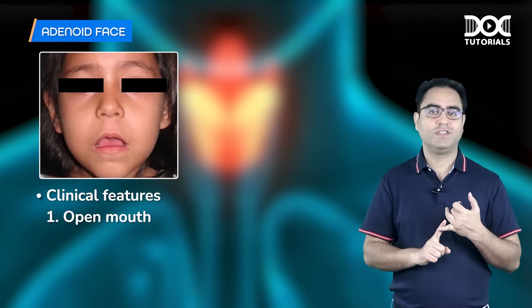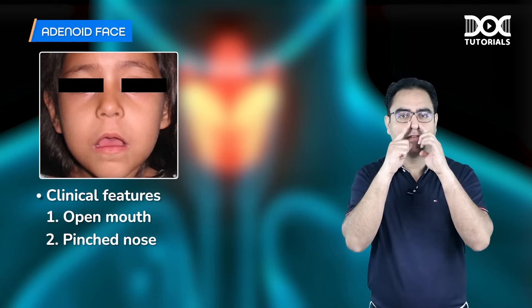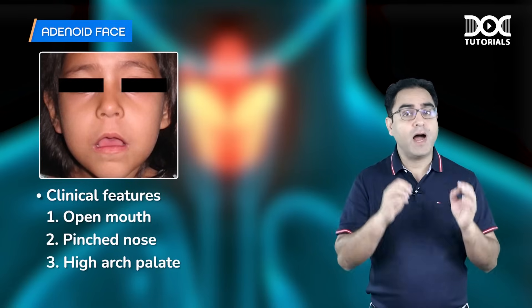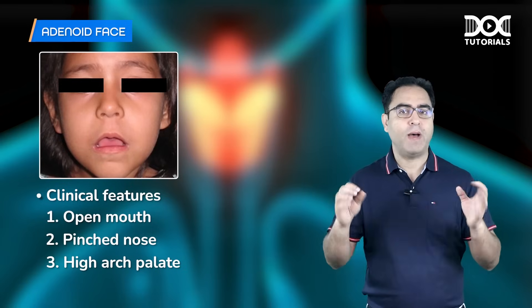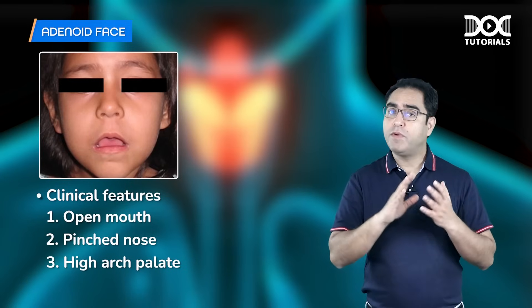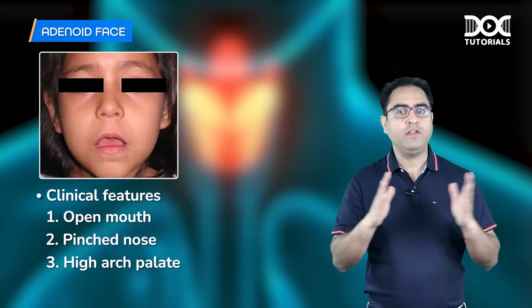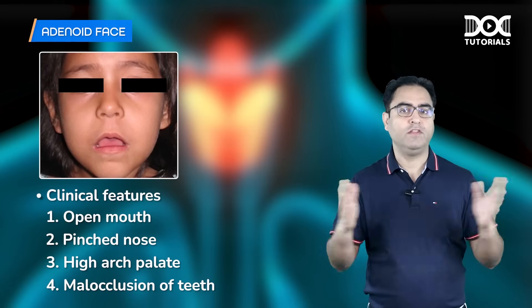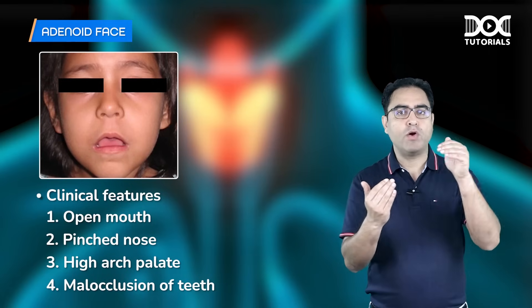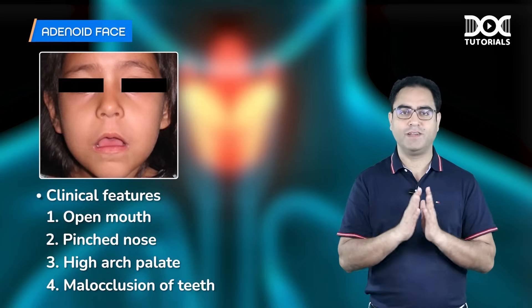The features of adenoid face are: number one, open mouth; number two, pinched nose — the nose is useless; number three, high-arched palate — due to mouth breathing the palate goes high; and number four, crowding of upper teeth or malocclusion of teeth, where the upper and lower teeth cannot touch each other. Dentition is affected due to mouth breathing.